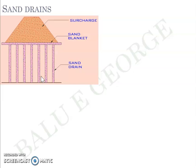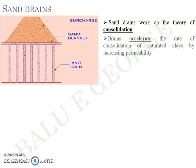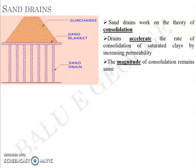Sand drains are usually installed in a square or triangular pattern in plan, above which a sand blanket layer is laid, with a surcharge load on top. Sand drains work on the theory of consolidation — they act as an accelerator to increase the rate of consolidation of saturated clays by increasing the permeability of the soil, but the magnitude of consolidation remains the same. You accelerate the process and bring in 45 millimeters of settlement prior to construction; the total magnitude remains 45 plus 5 equals 50 millimeters.